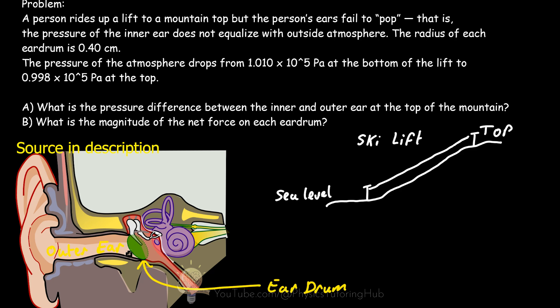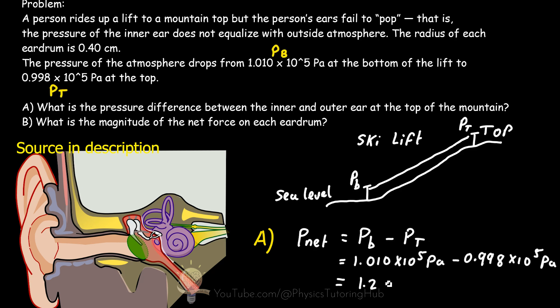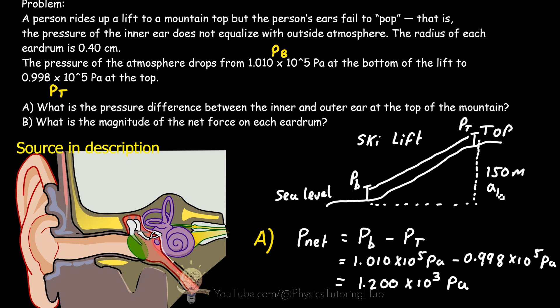The inner ear does not equalize with the outside pressure, meaning air pressure behind the eardrum is higher than outside. The difference in pressure between inner and outer ear is simply the difference in air pressure between the bottom and top of the lift. P net equals the pressure at the bottom minus the pressure at the top, giving a difference of 1,200 pascals. This pressure difference is typical when raising elevation by about 150 meters or 500 feet.